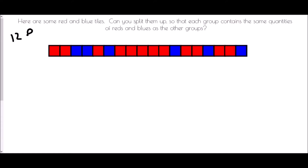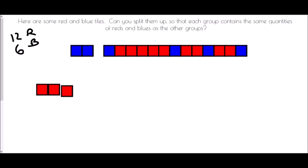So there are twelve red and there are six blue. All I want to do is group together reds and blues so that they're the same amount in each group that I make. Well, twelve and six are both even numbers, so I might just be able to split them both into two. So if I took six of the red ones and three of the blue ones, that makes one group.